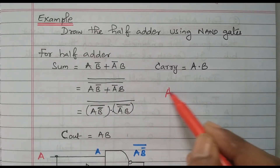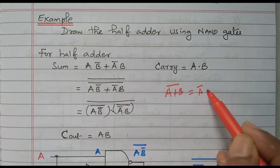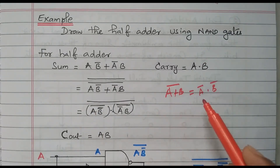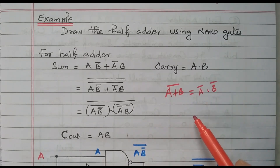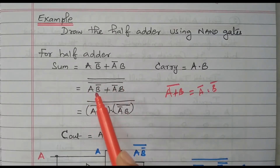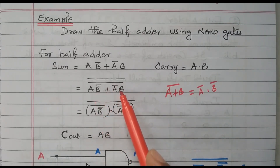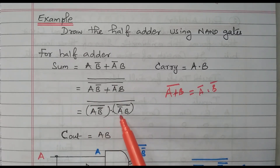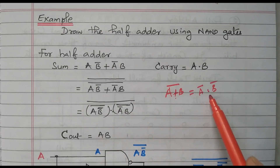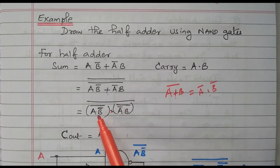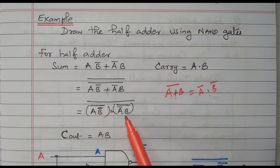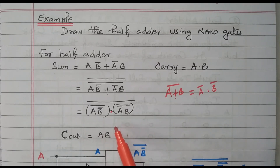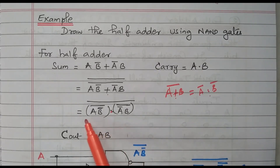Based on De Morgan's theorem: (A + B)̄ = Ā·B̄. So A plus B whole bar equals A bar into B bar — addition is converted into multiplication. Similarly, taking A = AB̅ and B = A̅B: (AB̅ + A̅B)̄̄ = (AB̅)̄ · (A̅B)̄, with one more complement. Here addition is converted into multiplication, and complement is given individually. The expression can now be easily implemented with the NAND gate because all operations are multiplication.